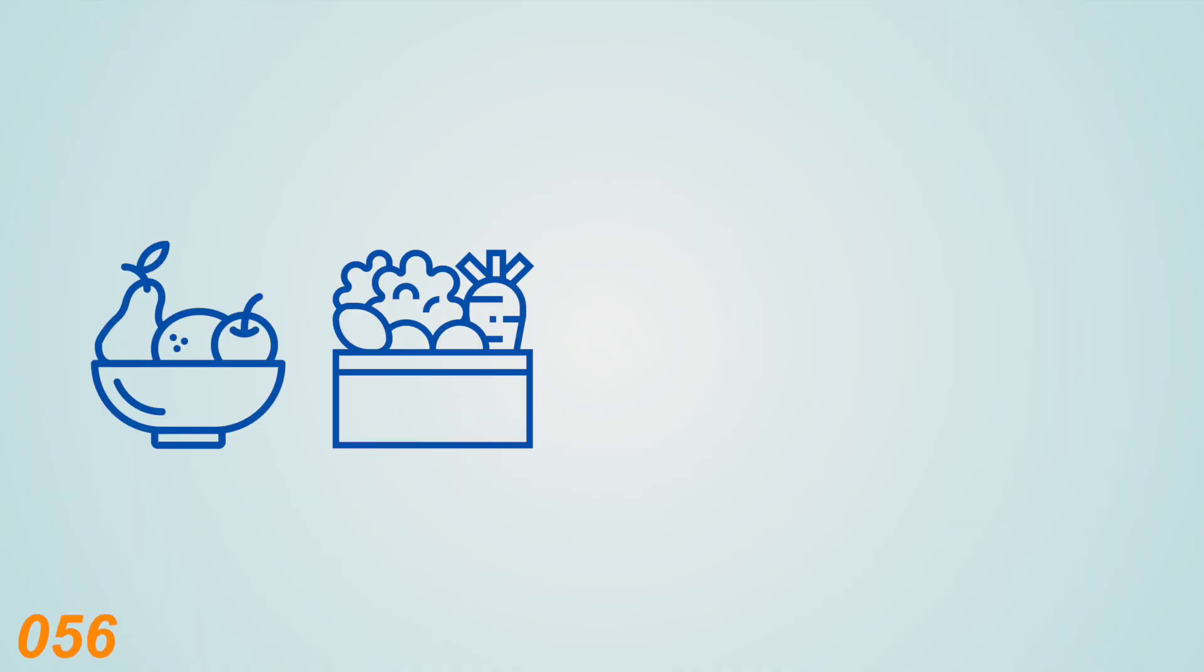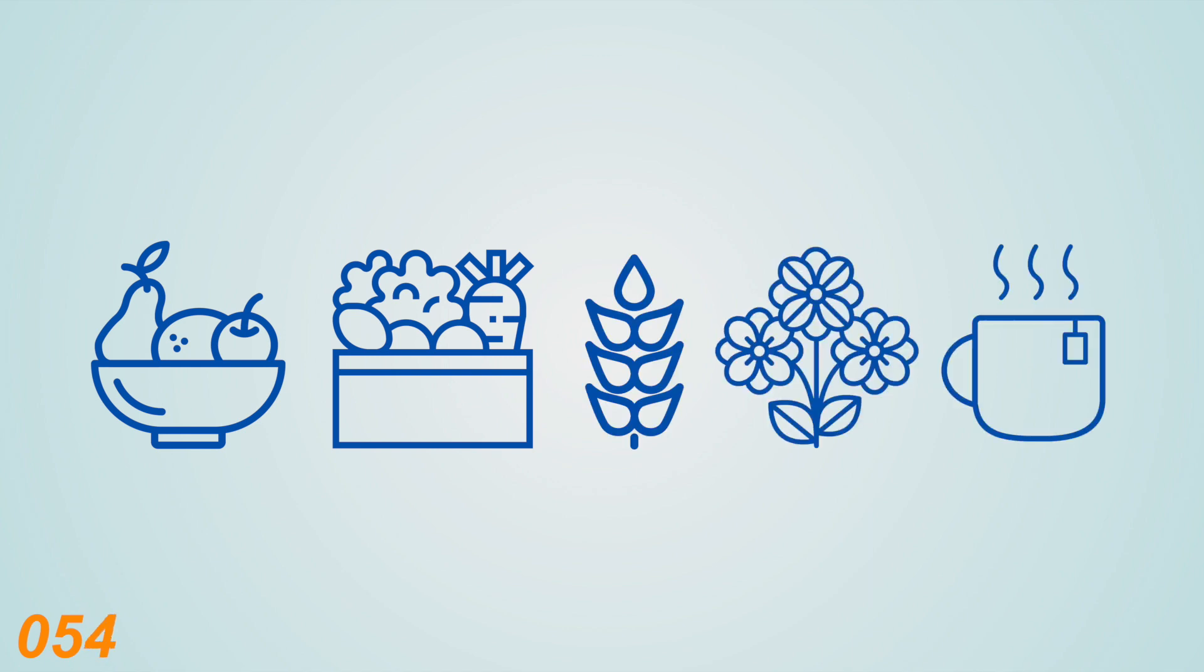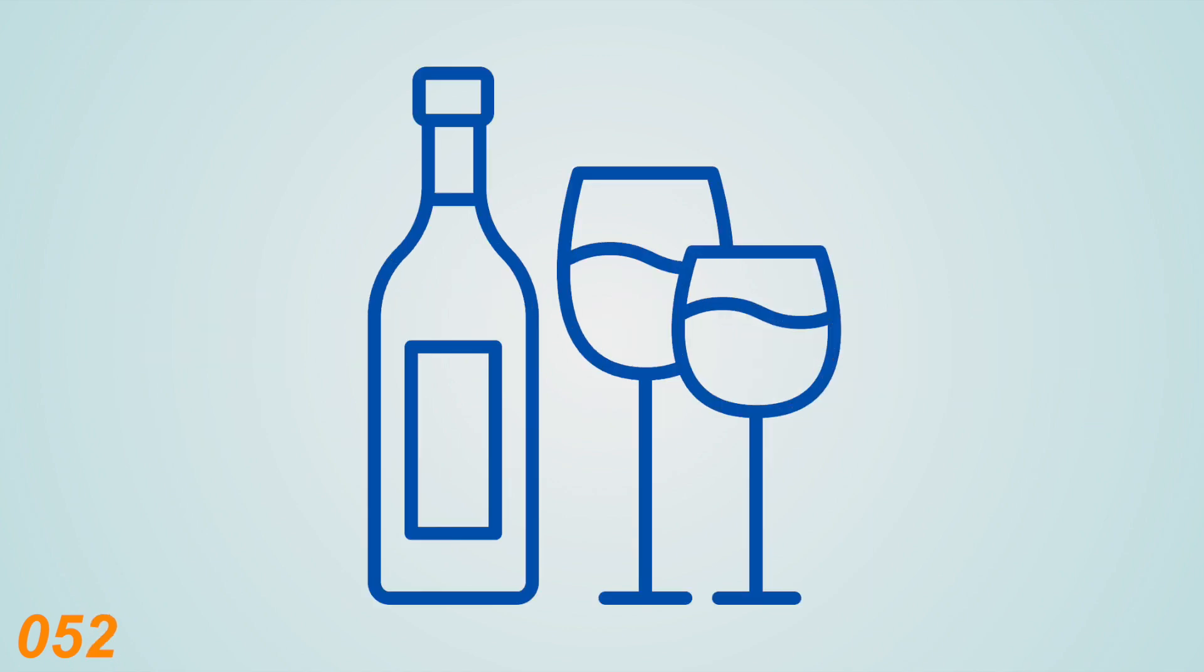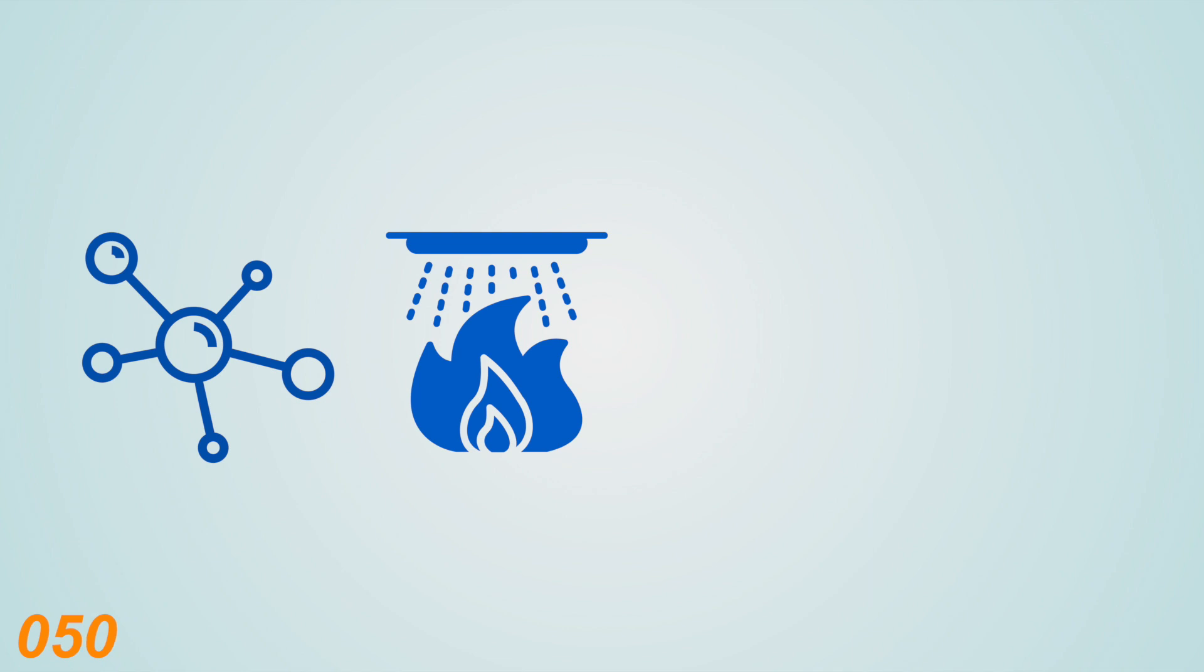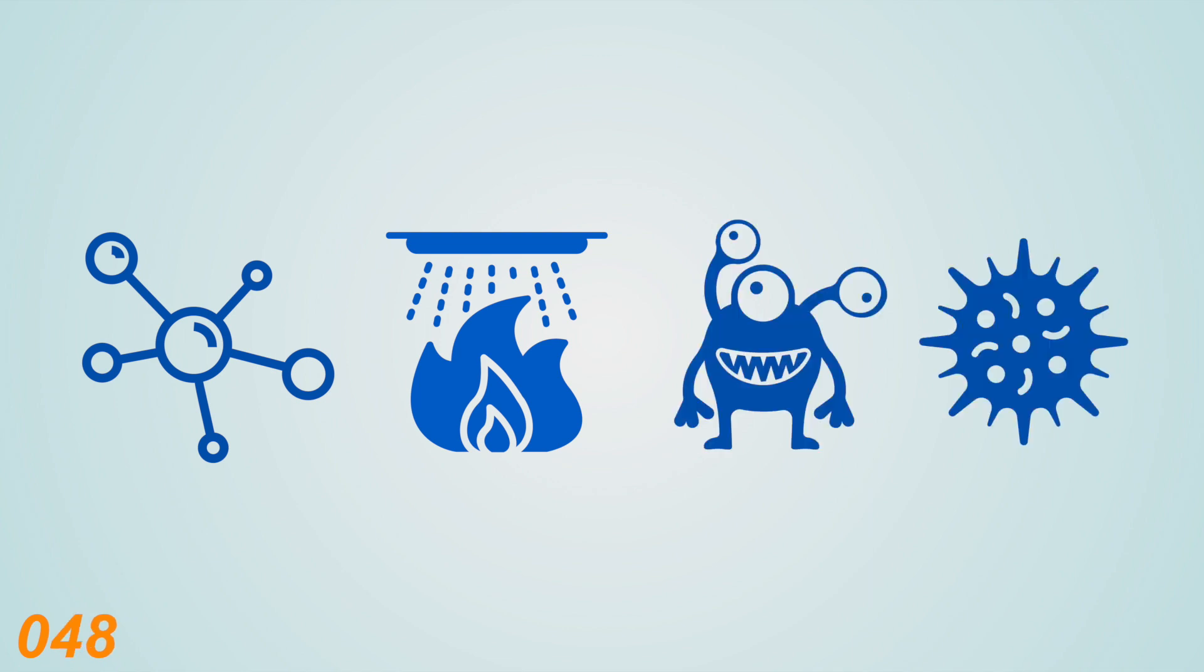Flavonoids are a group of natural substances that are found in fruits, vegetables, grains, flowers, tea, and best of all, wine. They have anti-oxidative, anti-inflammatory, anti-mutagenic, and anti-carcinogenic properties.